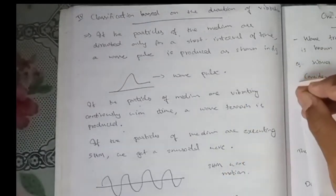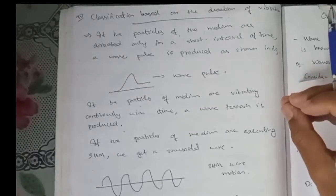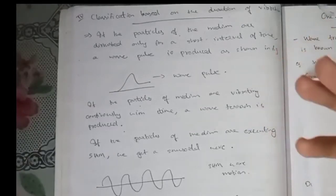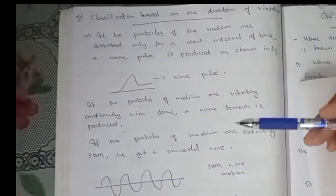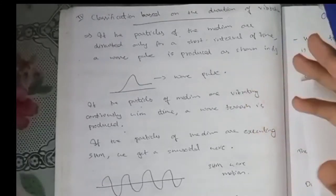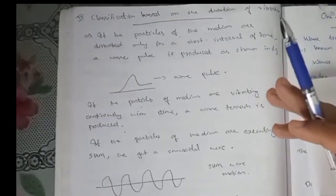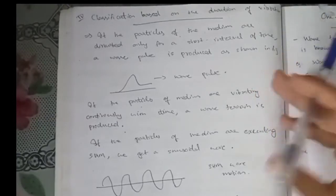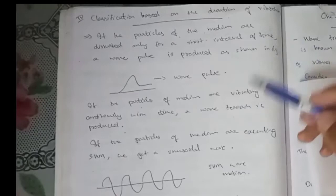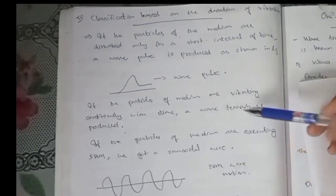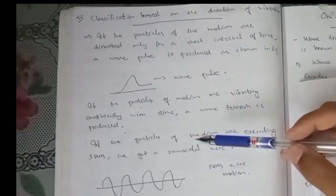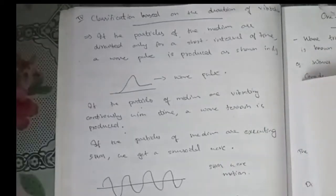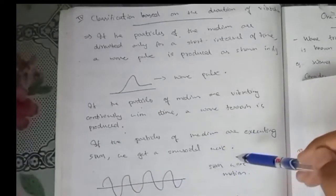If the particles of the medium are disturbed only for a short interval of time, a wave pulse is produced. If the particles of the medium execute simple harmonic motion (SHM), we get a sinusoidal wave.